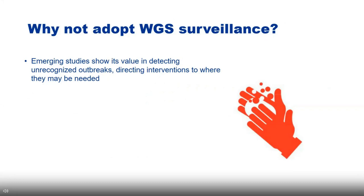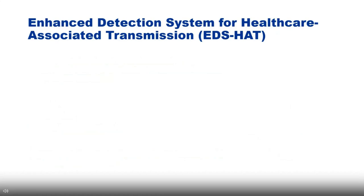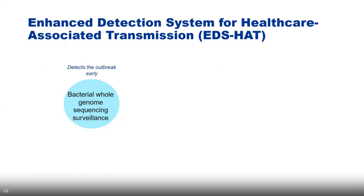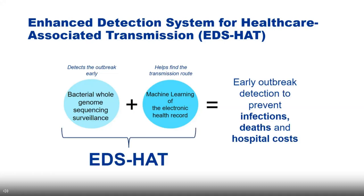So why don't we adopt sequencing surveillance? Studies show its value in detecting unrecognized outbreaks and guiding interventions, but there are barriers. Is there a cost-benefit? Sequencing isn't free. This is what we wanted to study at the University of Pittsburgh, which is why we created the Enhanced Detection System for Healthcare-Associated Transmission, or EDS-HAT. EDS-HAT combines bacterial whole genome sequencing surveillance with EHR data to detect outbreaks early and assist in finding the transmission route — ideally preventing infections, deaths, and saving the hospital costs.